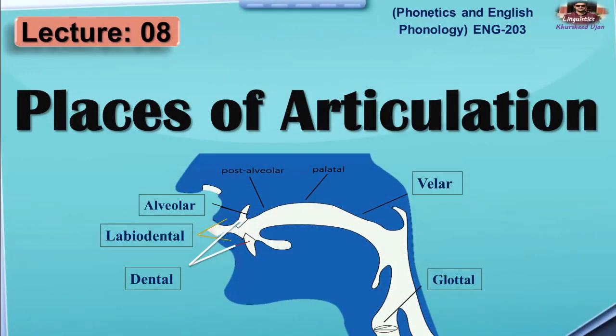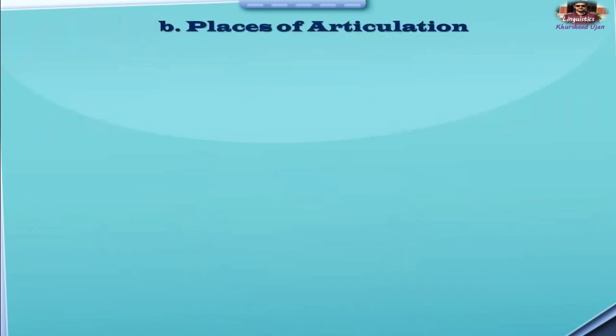Welcome. Today we are going to talk about places of articulation. This topic is from the contents subject phonetics and English phonology, English code 203. This is our eighth lecture — we have already done seven lectures in this program. If you look at this picture, there are so many names given to this diagram, and those are actually the places where articulation occurs.